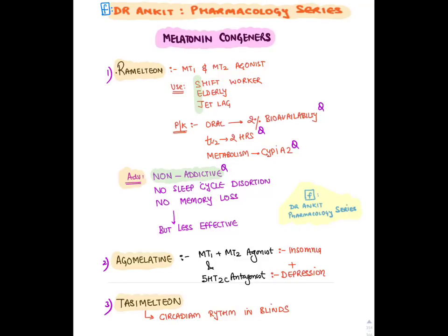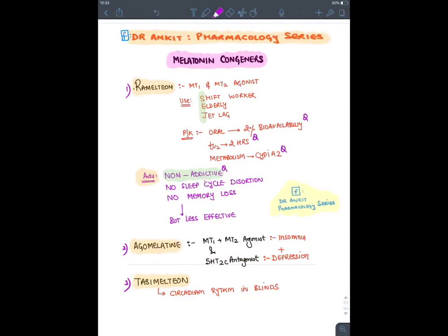For insomnia, melatonin congeners include: ramelteon, which acts on MT1 and MT2 receptors, used in shift workers, elderly, and jet lag patients. It has 2% oral bioavailability, half-life of 2 hours, is metabolized by CYP1A2, and is non-addictive. Agomelatine is also a 5-HT2C antagonist used for insomnia with depression. Tasimelteon maintains sleep-wake cycle in blind people. Melatonins are the only sedative-hypnotics that are non-addictive and don't cause memory loss or sleep cycle distortion.